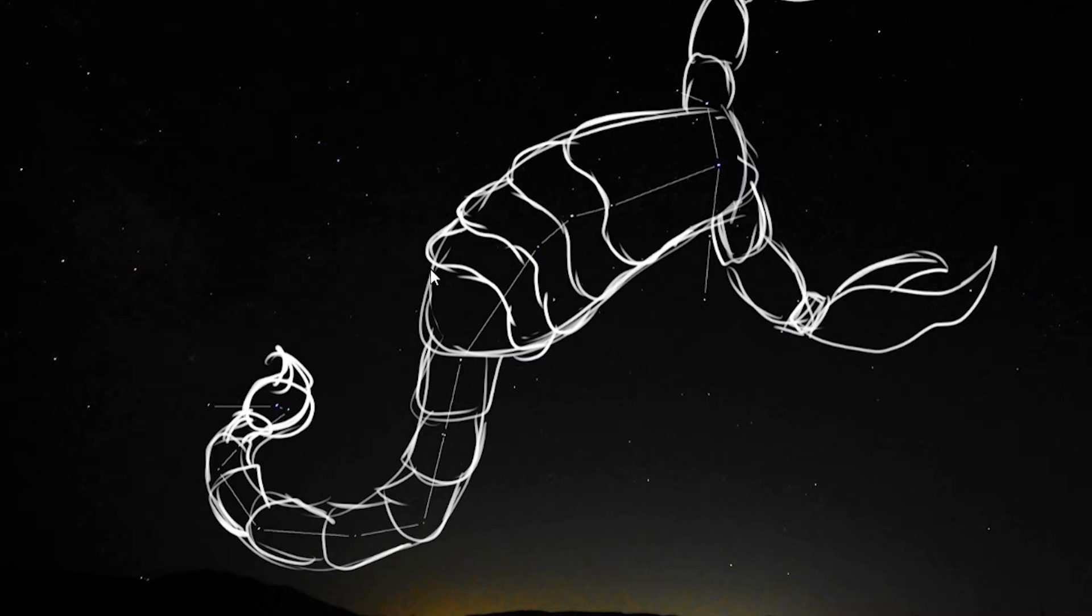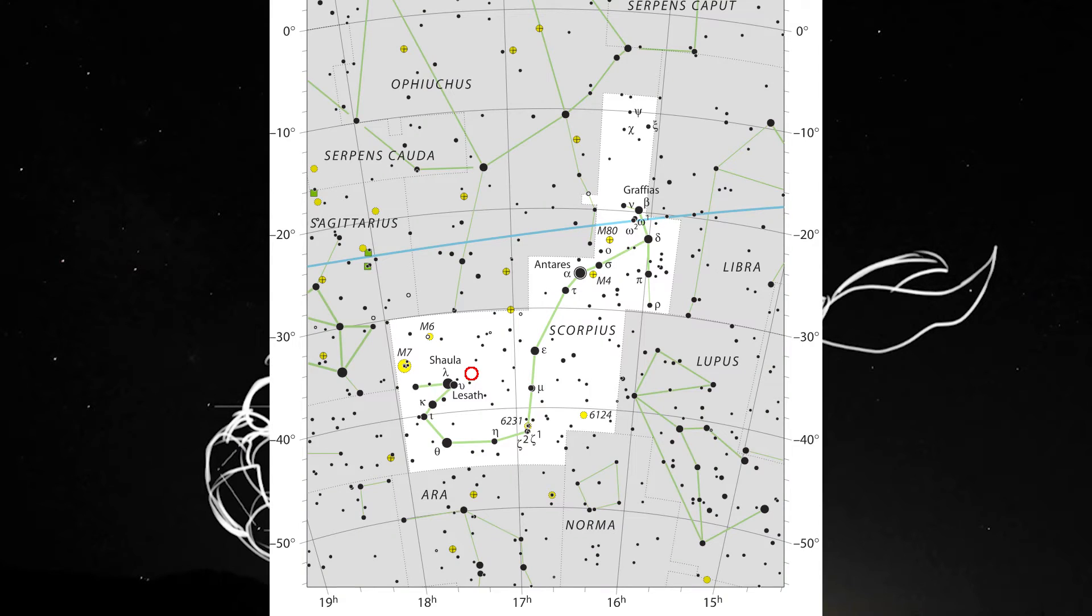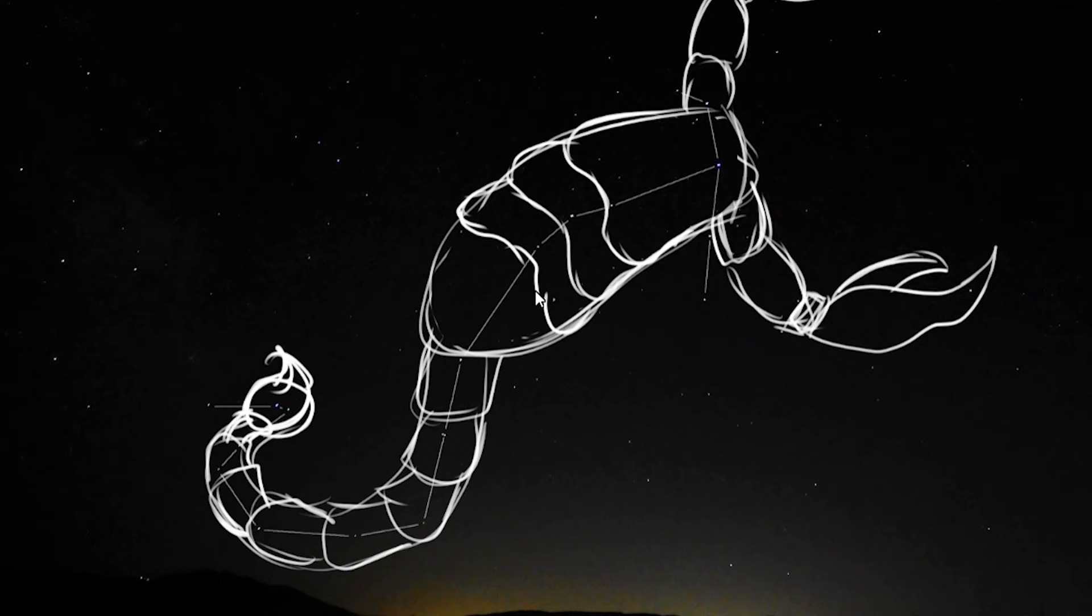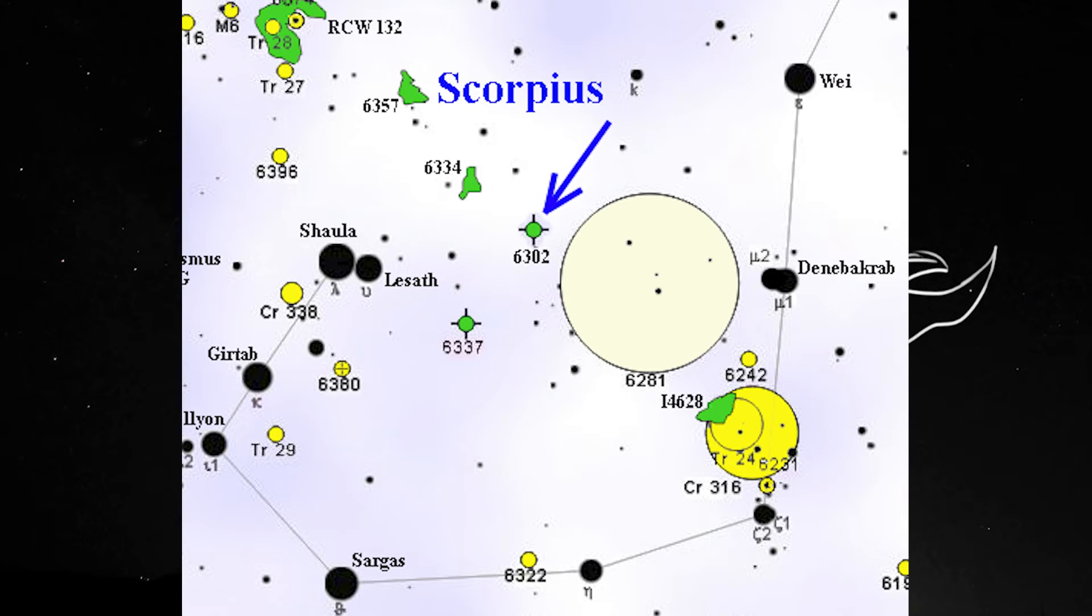Also near the stinger are some nebulas, specifically NGC 6334, or the Cat's Paw Nebula, which is the perfect name because it kind of looks like that, and it's not too far from the cat's eyes that we talked about earlier, those two bright stars in Scorpius' stinger. We also have NGC 6302, or the Butterfly Nebula, which is not in the Butterfly Cluster, but both are kind of near the Scorpion's tail as well.